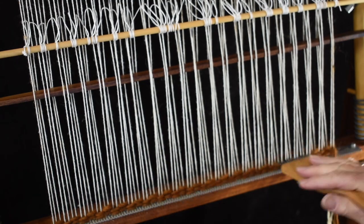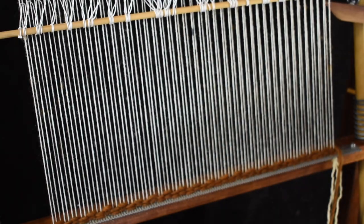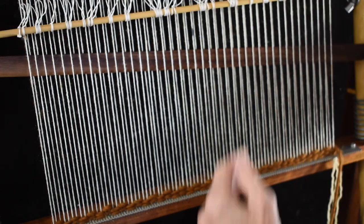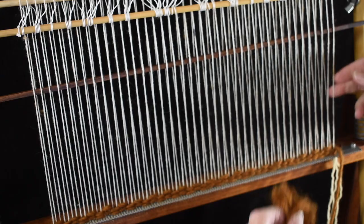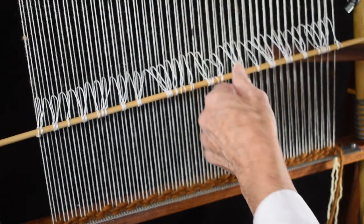Now that we have our four rows in, now we're ready to begin just plain weave. So I'm going to insert my batten underneath the shed stick, turn it on its side. Actually, I should probably do the other one first because I want to catch that edge warp.